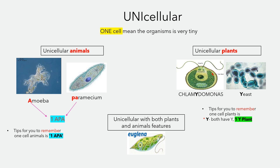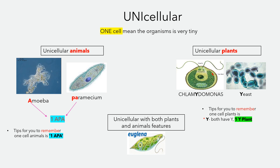Unicellular organisms in the plant kingdom are chlamydomonas and yeast. Both of them have 'white,' so we remember it as 'one white plant': one is unicellular, W stands for chlamydomonas, and Y stands for yeast. Both of them are under the plant kingdom.